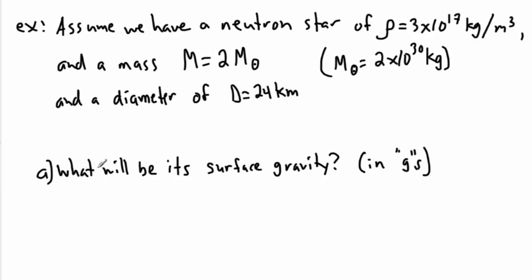The first question is, what will be its surface gravity? In other words, if you were to stand on there, what would be g? Remember, if you stand on Earth, g equals 9.81 meters per second squared. That would be the acceleration due to gravity here on Earth, or that's what we call the surface gravity.